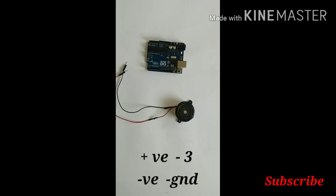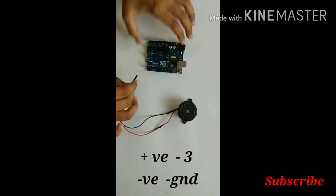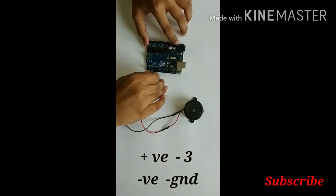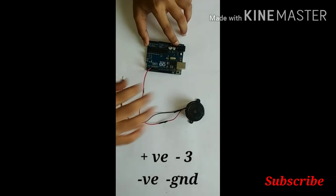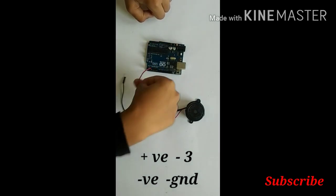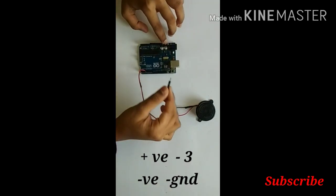Now connect the positive end of the buzzer to digital pin number 3 Arduino board. Now connect the negative terminal of the buzzer to GND.